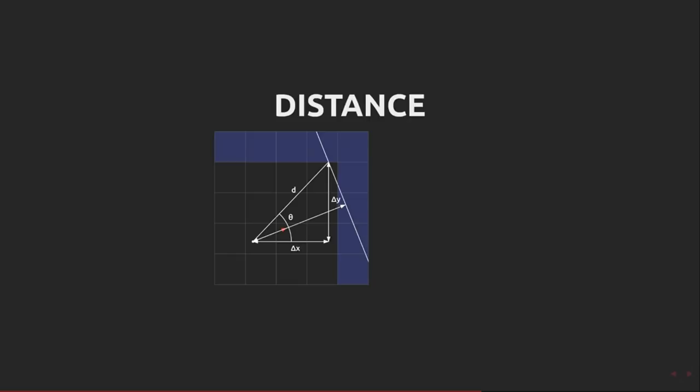We know theta, the angle of the ray itself. We want to calculate p. We know that it's d cos phi.